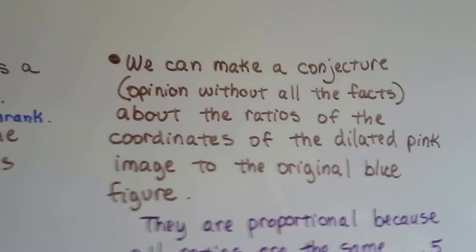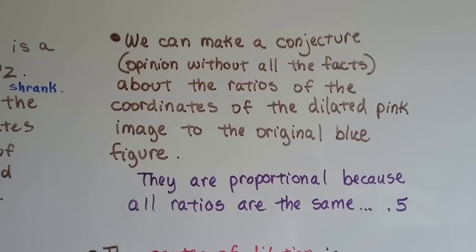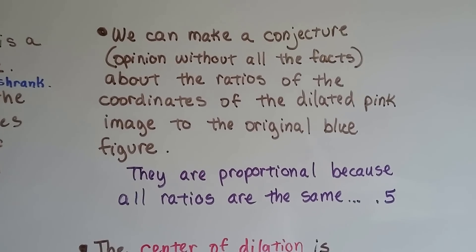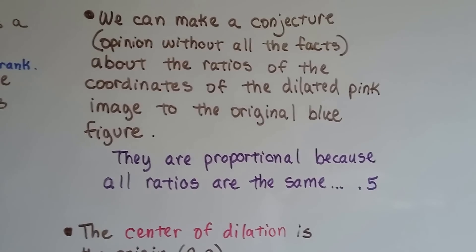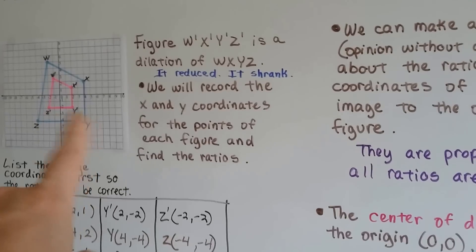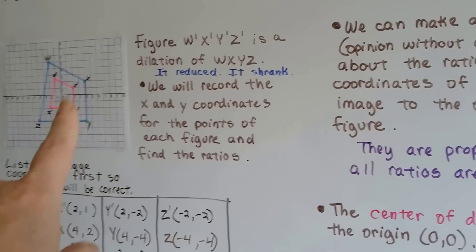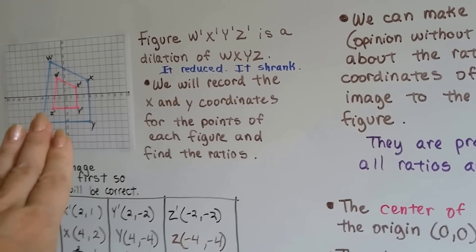So now we can see that the ratio between the pink triangle and the blue triangle, it's all a half. All the measures for the pink one are half of what the blue one are. We can make a conjecture. That's an opinion without all the facts, conjecture. We can make a conjecture about the ratios of the coordinates of the dilated pink image to the original blue figure. They're proportional because all the ratios are the same. They're 0.5. So they're similar, aren't they? They're not the same size, but they are the same shape and they have the same orientation. They're sitting exactly the same way.